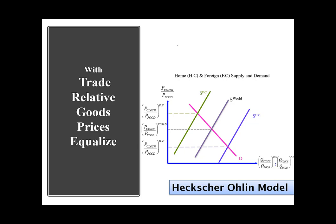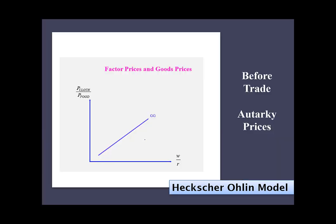When they start trading, the autarky prices converge and you get the world price, which is common across both countries after trade. Trade leads to equalization of relative goods prices, and that gives us the result for factor prices. In the Heckscher-Ohlin model, there is a one-to-one relationship between relative goods prices and factor prices — specifically the wage-rental ratio.